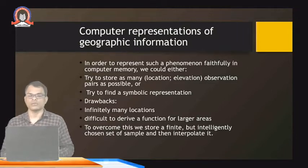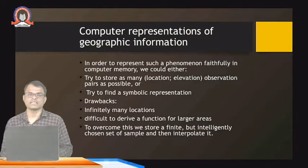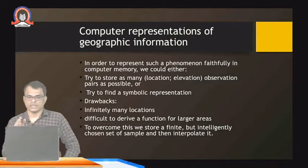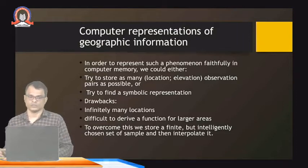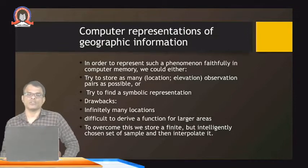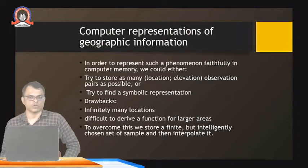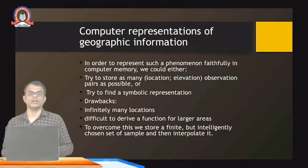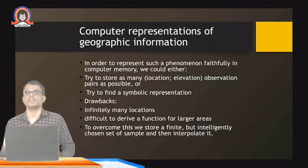Now we understand what objects and boundaries are — next we need to understand how to represent them on a computer. We see roads while traveling, and the same road is represented on a map. To represent such phenomena faithfully in computer memory, we could either try to store as many location-elevation observation pairs as possible, or try to find a symbolic representation — for example, using symbols to represent a hospital or a hotel.